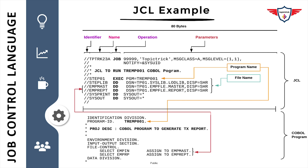The other two job control statements used in this JCL are the execute statement and the DD statement. In step 01, the execute statement is executing a COBOL program called TREMP001. As mentioned earlier, the execute statement is the first statement after the job card, and each JCL must have at least one execute statement. After the execute statement, you have DD statements which specify the input and output file details used by your COBOL program.